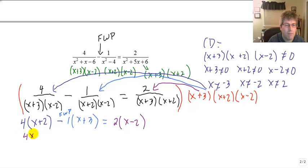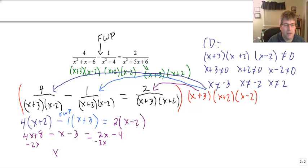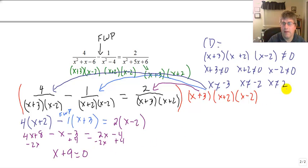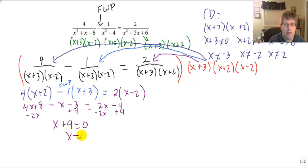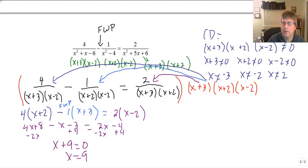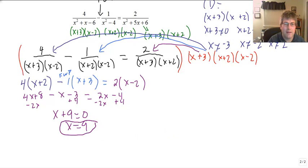Distributing: 4x + 8 minus x minus 3 equals 2x minus 4. Combining like terms and subtracting 2x from both sides gives x. Adding 4 to both sides: 8 plus 4 is 12, minus 3 is 9, so x plus 9 equals 0 — wait, I get x equals 9. Going back to check the restrictions: 9 is not negative 3, negative 2, or positive 2, so we're all set. x equals 9.